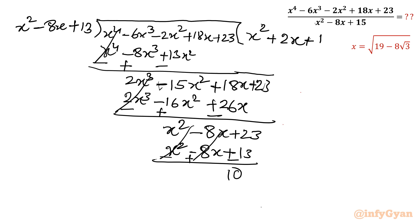See the advantage, the benefit. I can write my numerator. Factorization of numerator. Let me write here: +18x + 23. It would be equal to (x^2 - 8x + 13) times (x^2 + 2x + 1) plus this remainder.